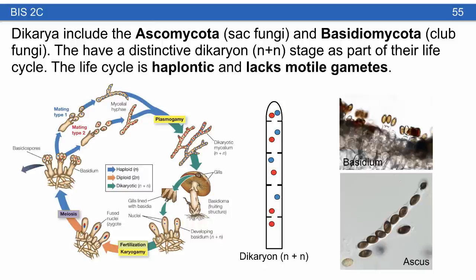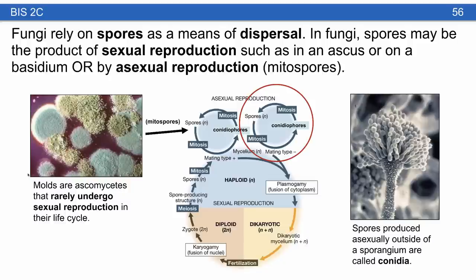One important thing about the life cycle of fungi is that there are no motile gametes — instead, the nuclei act as motile gametes. In fungi, spores can be produced in the sexual part of the life cycle via meiosis, or asexually by mitosis. Fungi rely on spores as a means of dispersal. Most of the time when we look at petri dishes in BIS2C lab, we're seeing the product of asexual reproduction — sometimes called mitospores because they're produced by mitosis. Some molds only rarely undergo sexual reproduction and produce asexual spores very rapidly.